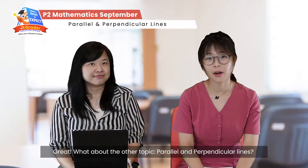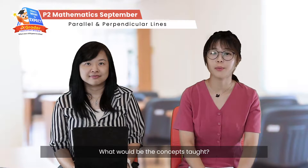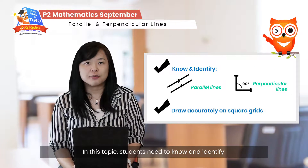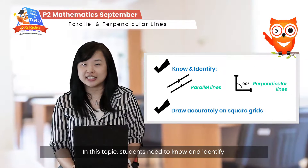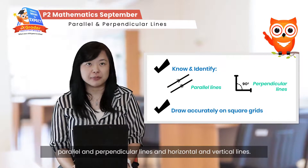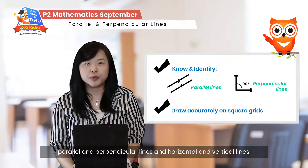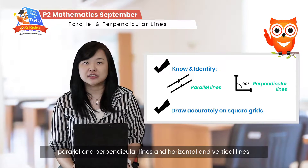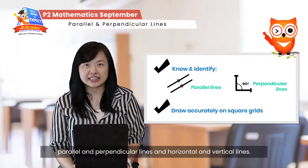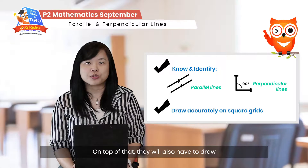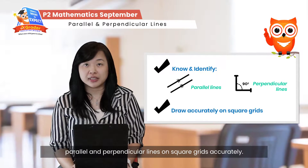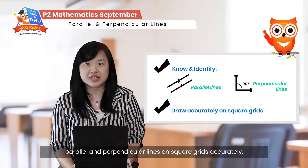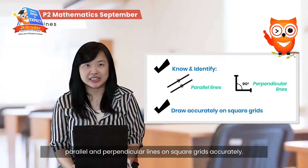So what about the other topic — parallel and perpendicular lines? What would be the concepts taught? In this topic, students will need to know and identify parallel and perpendicular lines, and also horizontal and vertical lines. On top of that, they will also have to draw parallel and perpendicular lines on square grids accurately.